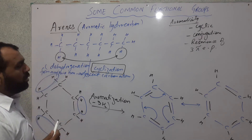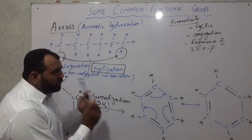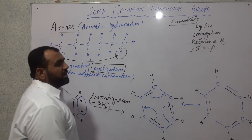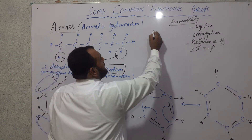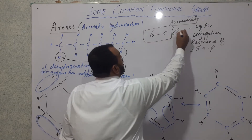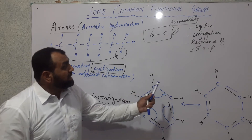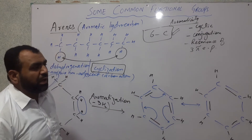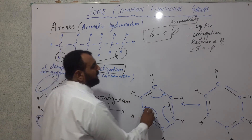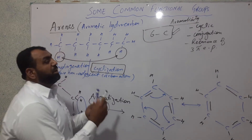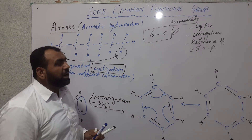Cyclic hydrocarbons can be either homocyclic or heterocyclic. In homocyclic compounds, all ring atoms are carbon, and aromaticity cannot start with fewer than six carbons. So for a homocyclic compound to be aromatic, it must have at least six carbons. The simplest aromatic hydrocarbon — six carbons — is benzene, which is considered the basic repeating and functional unit of aromatic hydrocarbons.